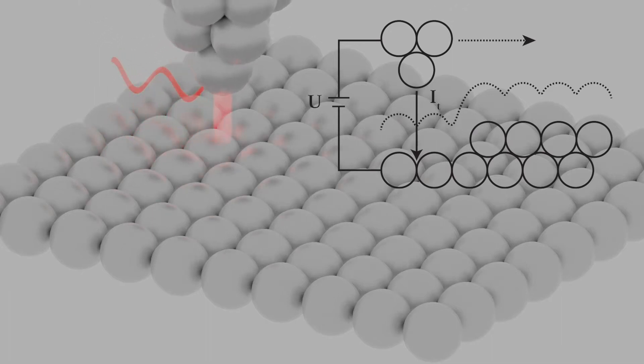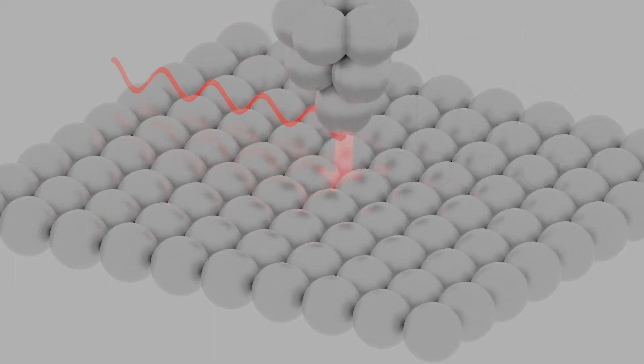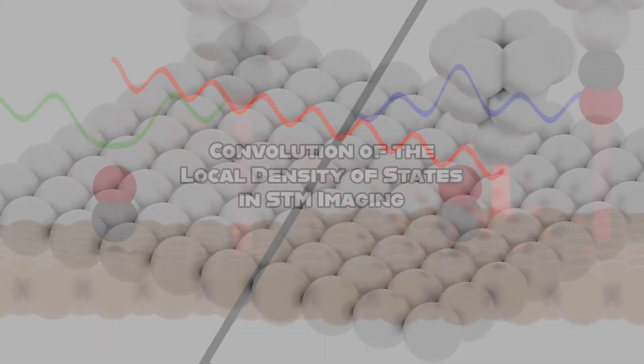An atomically sharp tip is brought close to a surface while a biased voltage is applied, leading to electron tunneling. This tunneling current is a function of the tip surface distance, applied voltage, and the local density of states.